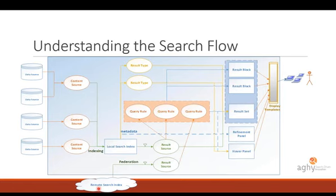Some use cases for remote indexes: obviously we can use O365 and remote SharePoint indexes, but you can also display results coming from Wikipedia, MSDN, Financial Times, or any website. Even if a site is not directly available for remote indexing, you can access it through Bing. In the result source definition, we can specify a remote index to use and apply some additional filters.